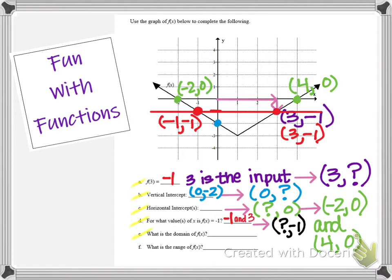Now let's look at the domain. For the domain, I want to scan the graph from left to right and see what all the possible x values are — where the graph exists as I look from left to right. Going all the way to the left on my x axis, I can see the graph also continues towards the left; the arrow is pointing up but also to the left as it increases, so on the left side I'm going all the way out to negative infinity. Continuing towards the right, the arrow goes up and out to the right, so my domain for this graph is negative infinity to positive infinity.